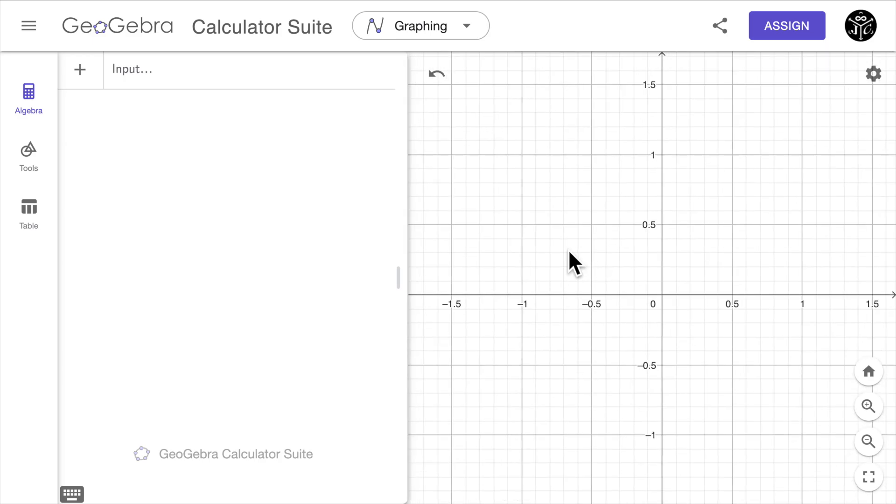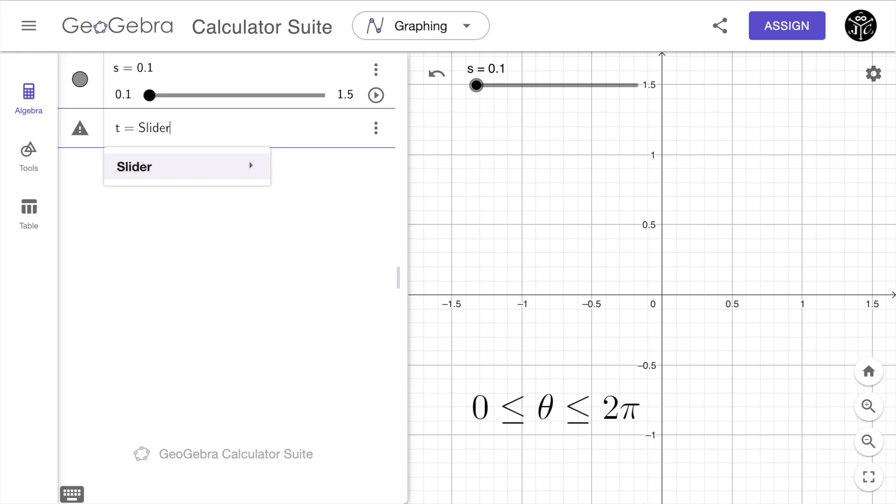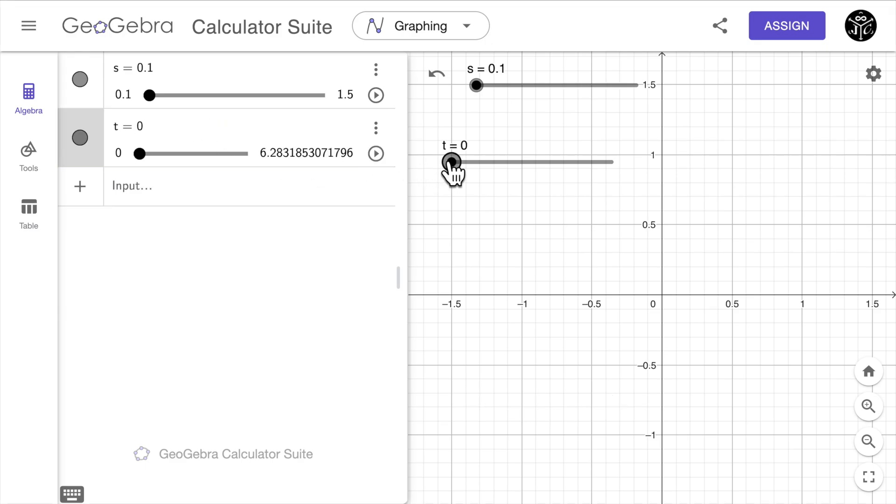Now the first thing that I want to do is to define the scale factor as s equal to a slider from 0.1 all the way to 1.5 with an increment of 0.01. Now what I want to do is also to define the angle theta. So that is going to be t equal to a slider from 0 to 2 pi with an increment of 0.01. And that's it. So this is going to represent my angle and I have my scale factor.